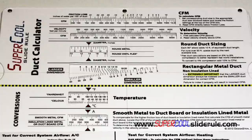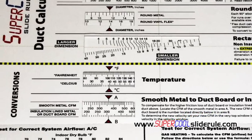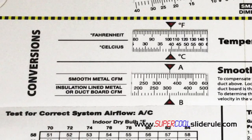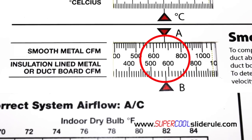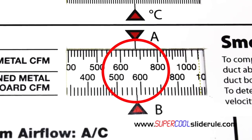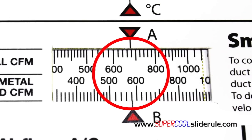Now let's suppose that in this application our insulation will be on the inside of the ductwork. Insulation lined metal has higher friction and lower CFM output than smooth metal duct, so we will need to use our conversion found right here. The super cool slide rule is the first tool to ever contain a direct reading conversion from smooth metal duct to insulation lined metal. To use this we simply set the smooth metal duct to 675 and check the corresponding number directly below it. In this example our number will be 580, so the CFM output of insulation lined metal will be 580.